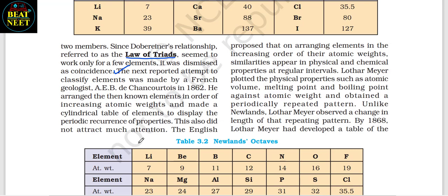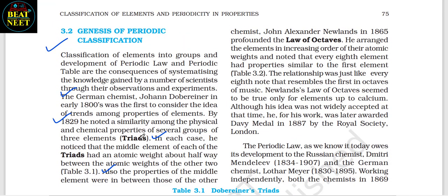The next attempt to classify elements was made by French geologist A.E.B. de Chancourtois in 1862. He arranged the known elements in order of increasing atomic weights and made a cylindrical table to display the periodic recurrence of properties, but this did not attract much attention. The English chemist John Alexander Newlands in 1865 propounded the Law of Octaves. He arranged elements in increasing order of atomic weights and noted that every eighth element had properties similar to the first — just like every eighth note that resembles the first in octaves of music. Newlands' Law of Octaves seemed to be true only for elements up to calcium, and his idea was not widely accepted at that time.